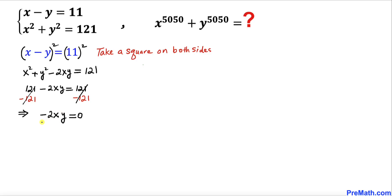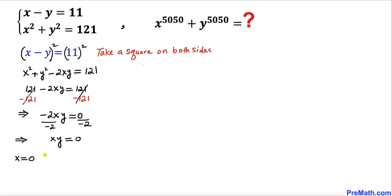Now let's divide both sides by negative 2. So our xy value turns out to be simply 0. And xy equals 0 means we are going to have three scenarios: either x equals 0, or y equals 0, or both x and y equal 0.